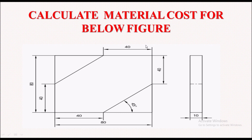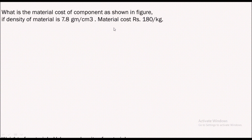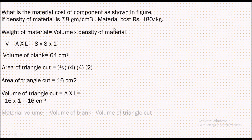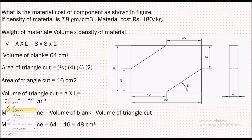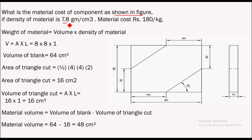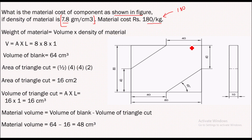Hello everyone, this is Amar. In this video we'll see how to calculate the material cost for a given figure. The problem definition is: what is the material cost of the component shown in the figure, if the density of material is 7.8 gram per centimeter cube — that is a steel material — and the material cost is 180 rupees per kg. So we have to find out the weight of this material to get the actual cost, which will be weight multiplied by 180 rupees.